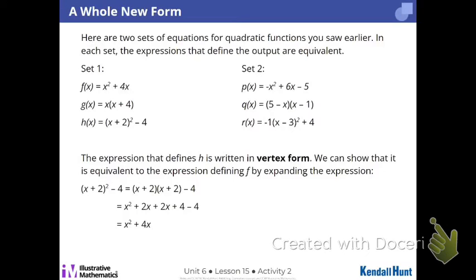So when we expand r of x, we need to make sure that we have the binomial x minus 3 twice because that's what's happening. Now the next thing, there's two things you could do with that negative 1 because of the commutative and associative properties of multiplication.